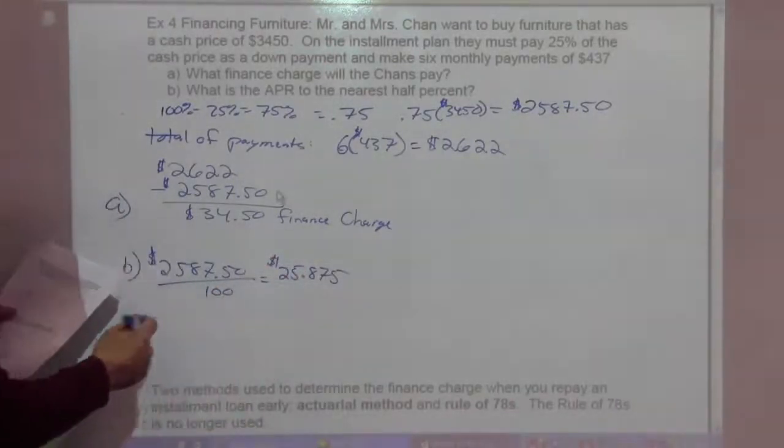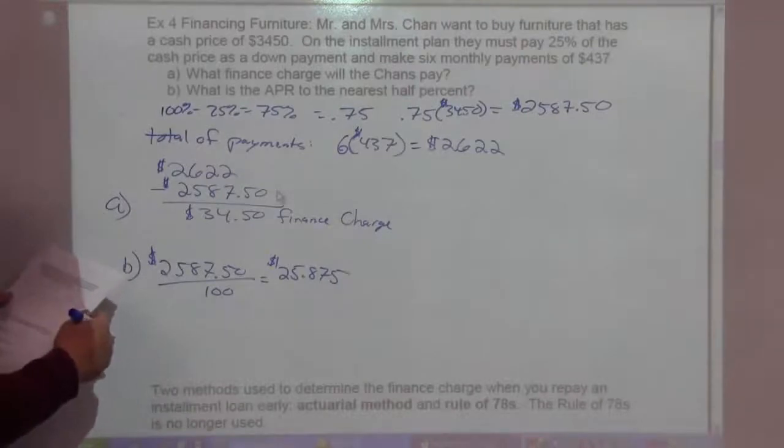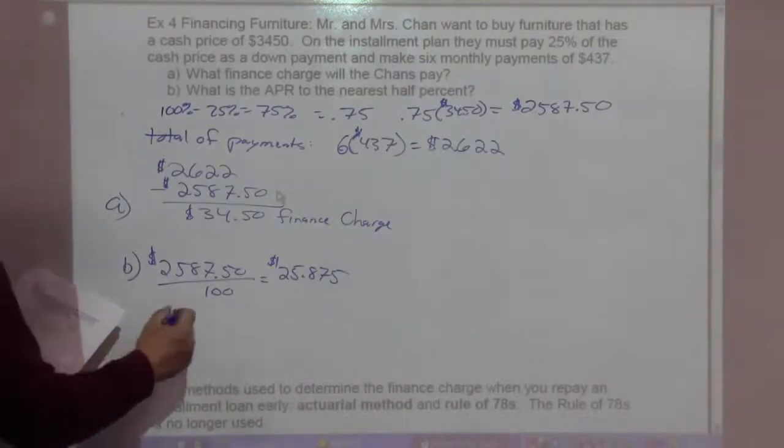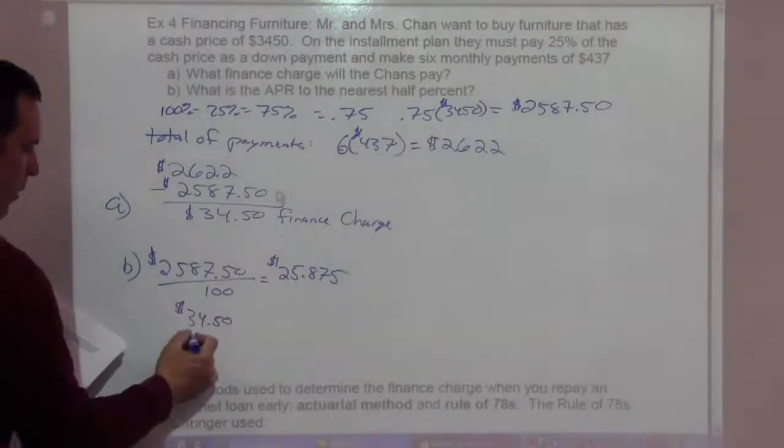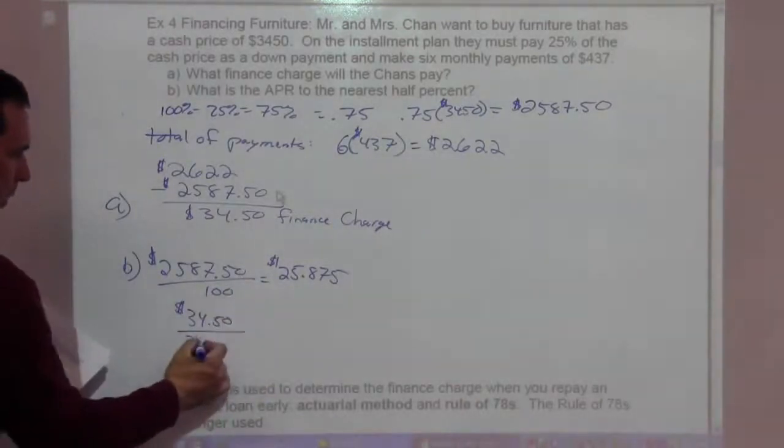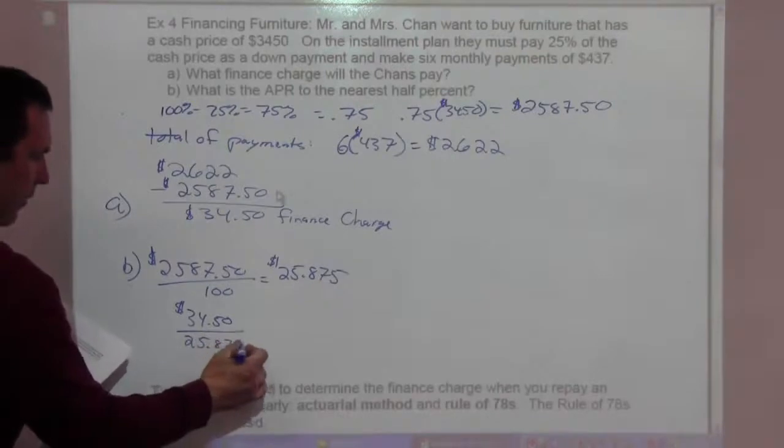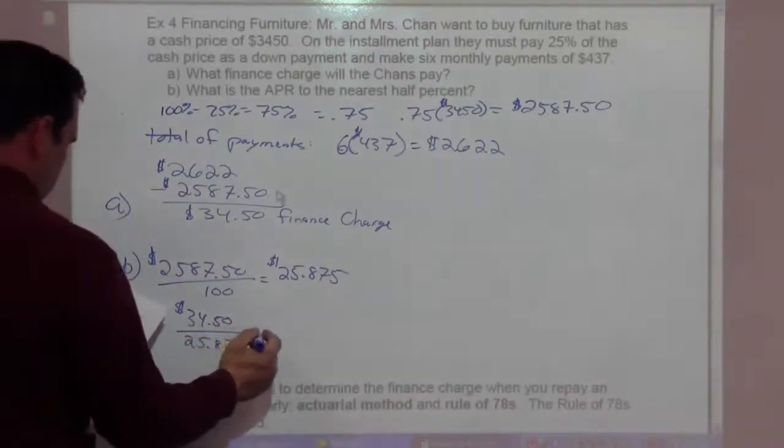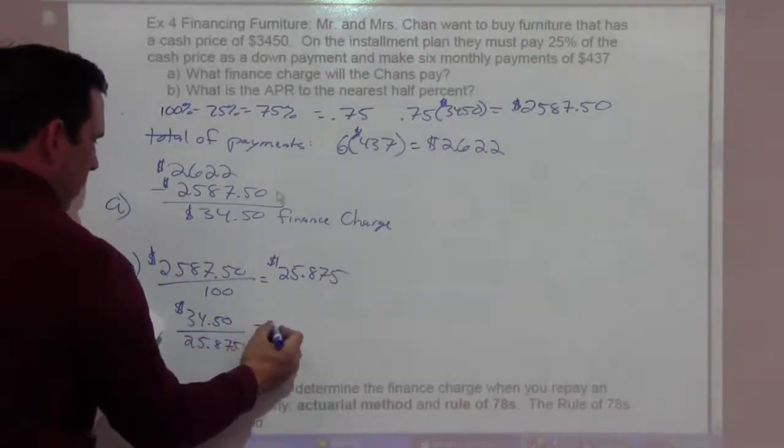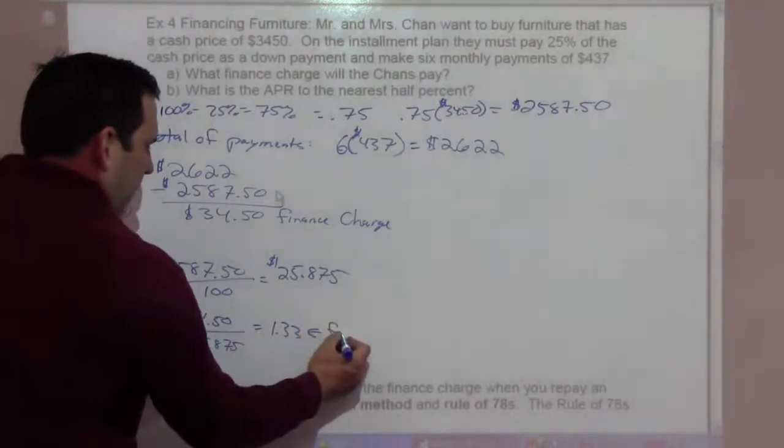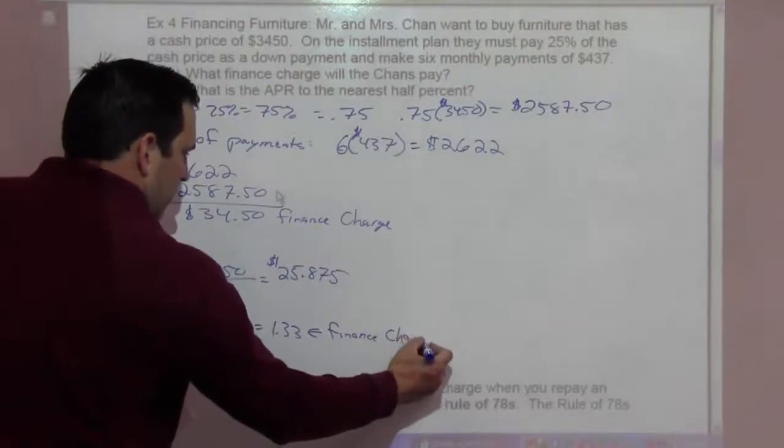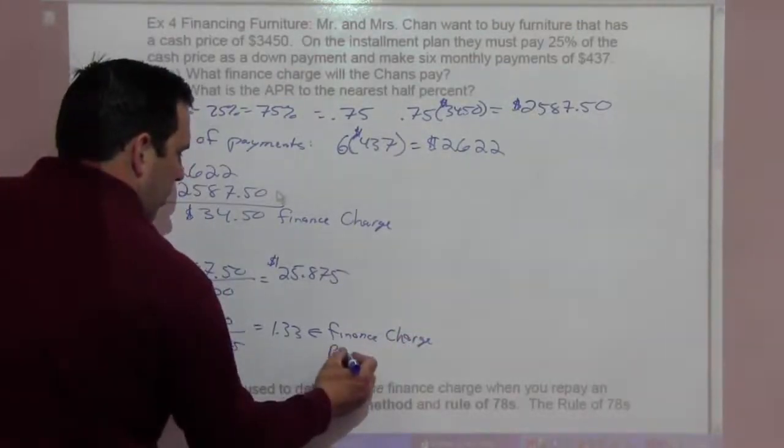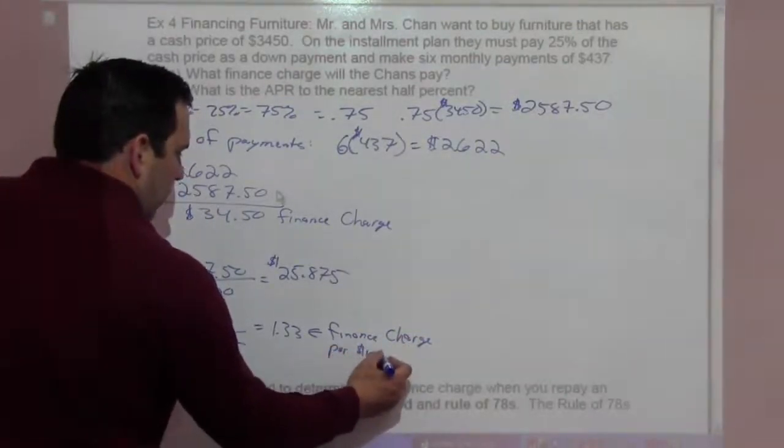So we're going to do our $34.50, the finance charge, divided by the number of hundreds borrowed, 25.875. And that gives us $1.33, and this is the finance charge per $100 borrowed.